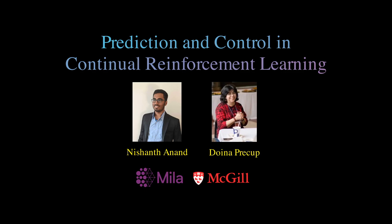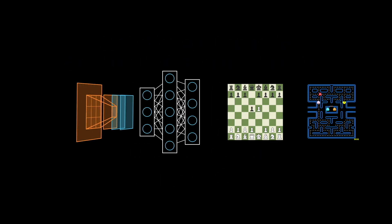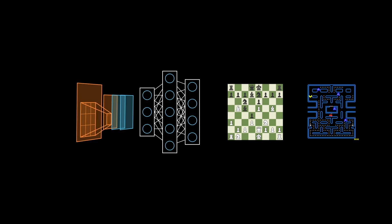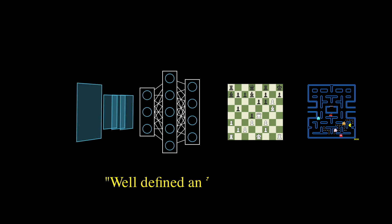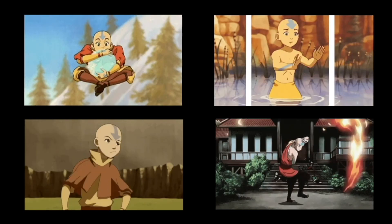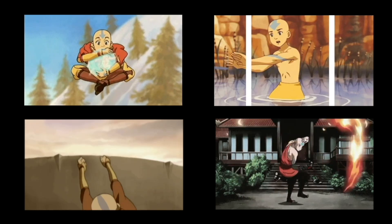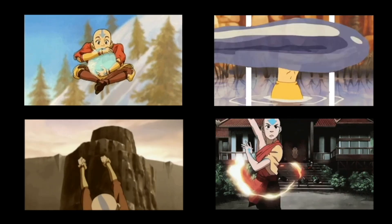Deep reinforcement learning has been successful in solving many complex tasks like playing chess and playing video games from pixels. But the underlying algorithms used implicitly assume that the task is well-defined and stable over time. Humans, on the other hand, learn continually throughout their life.